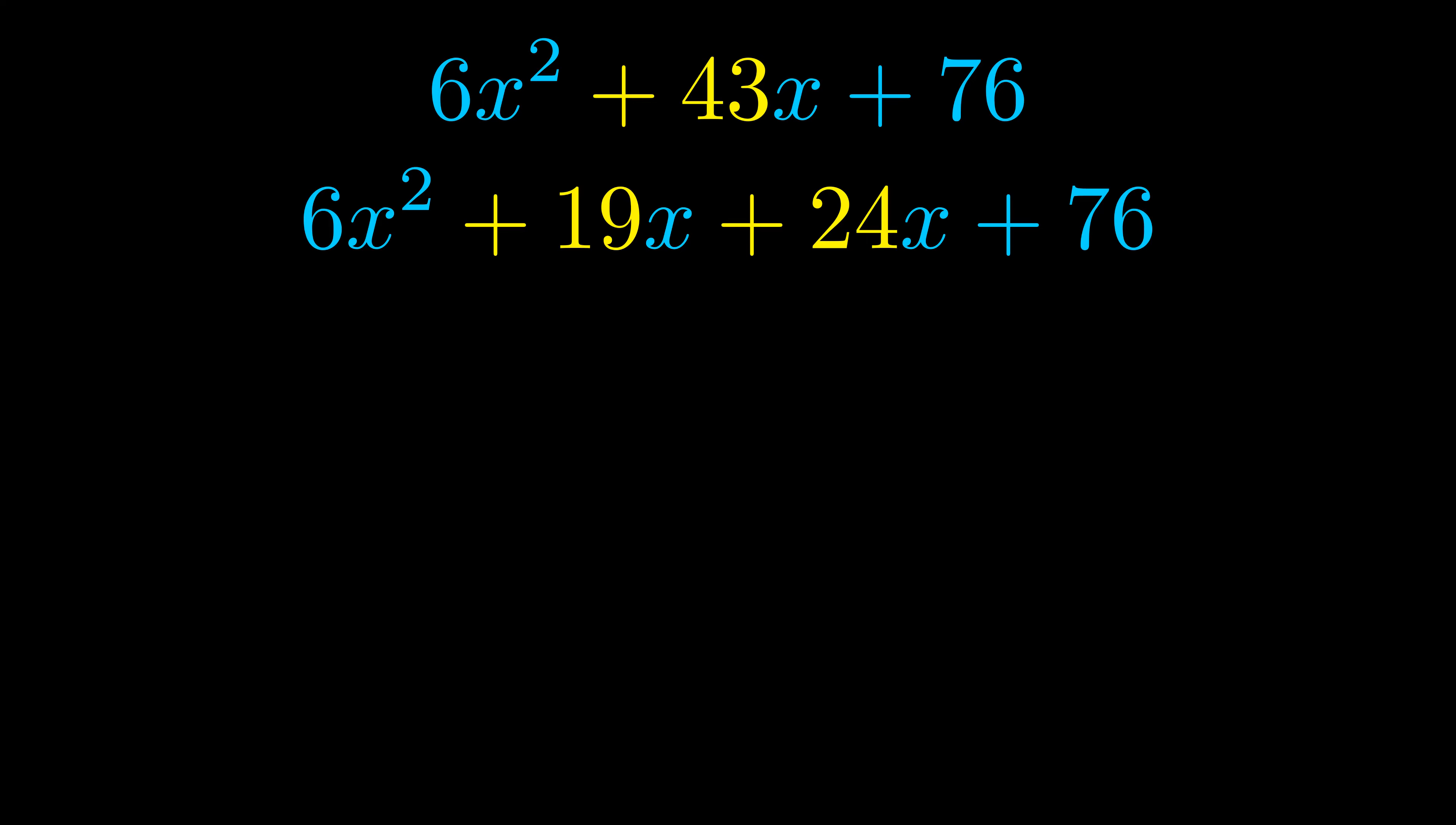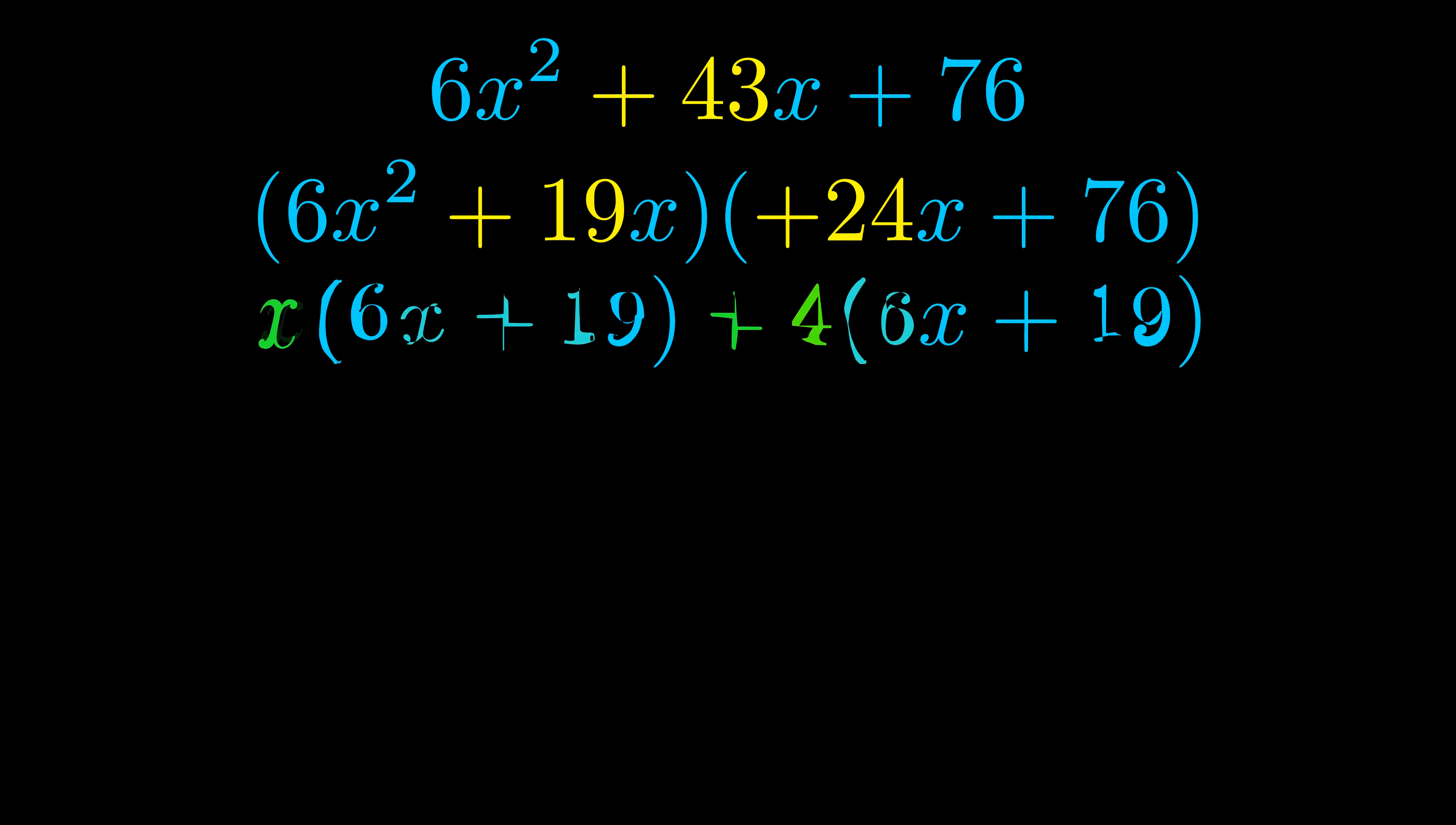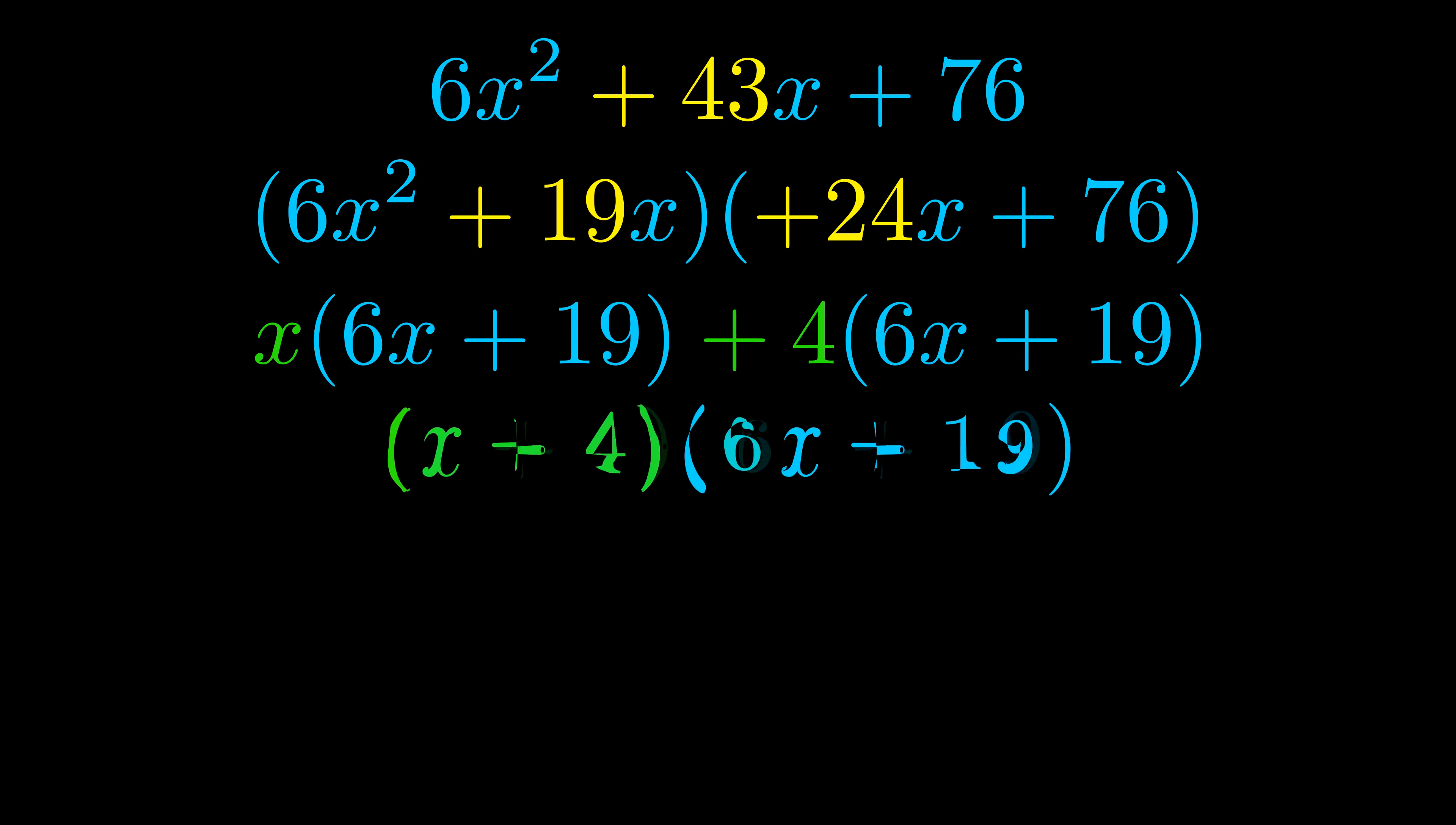Once we've done this we go ahead and we put parentheses around the first term and the last term. And we do that so that we can take the greatest common factor out of both terms. We can see the greatest common factor is now outside in green. Notice also how what remains inside of the parentheses is the same in both cases. The blue values are the same.